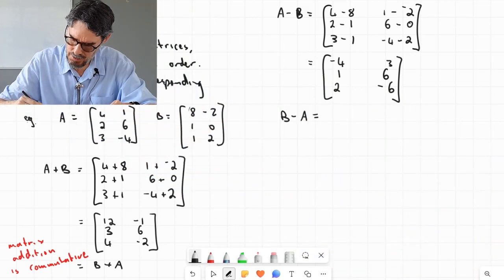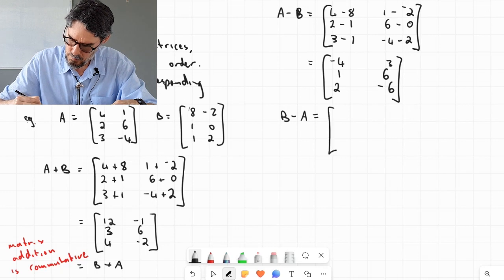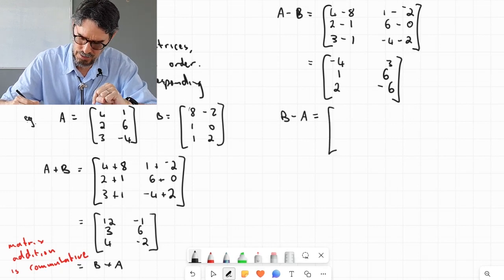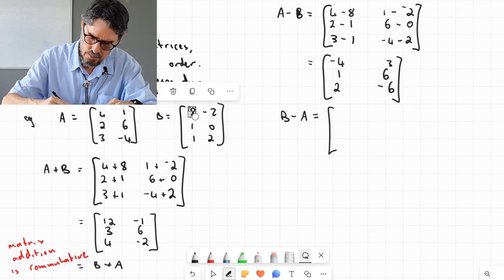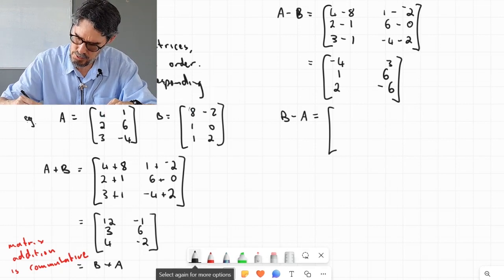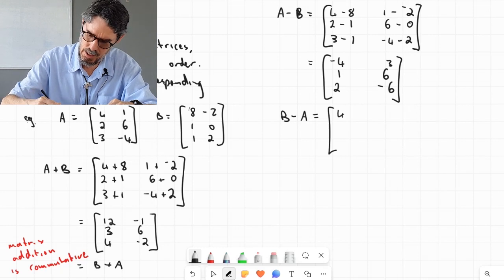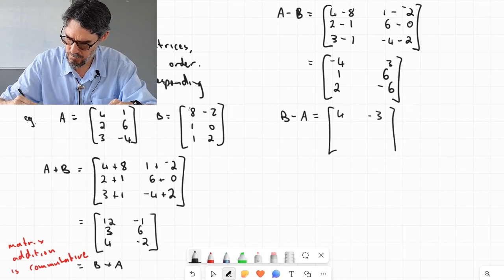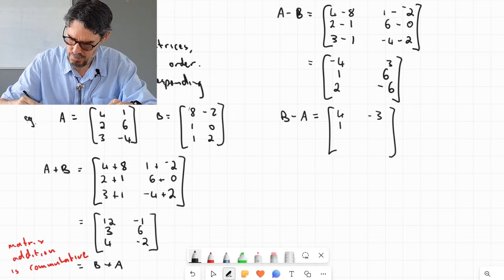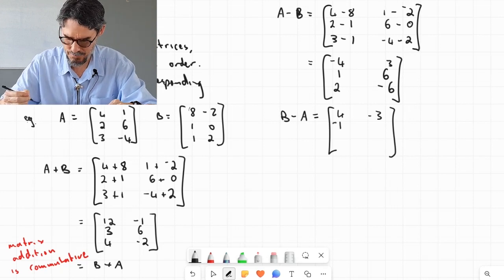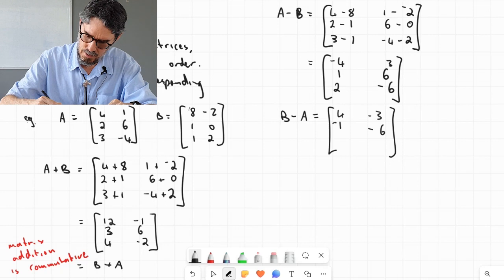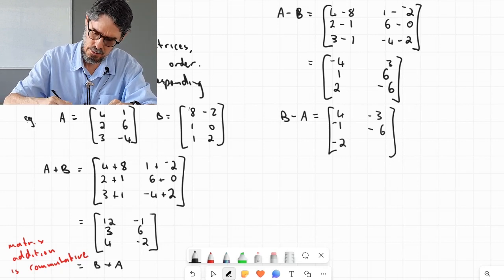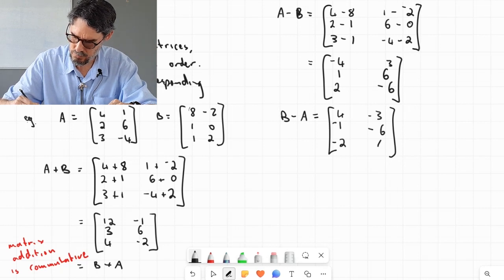B minus A, on the other hand, just to show you what happens. B minus A, I will skip it this time and show you what I mean. So B minus A, we're just going to go 8 minus 4 first, which is 4, and the next element, negative 2 take 1 is negative 3. 1 take 2 is negative 1. 0 take 6 is negative 6. 1 take 3 is negative 2. And 2 take negative 4 is 2 plus 4, which is 6.